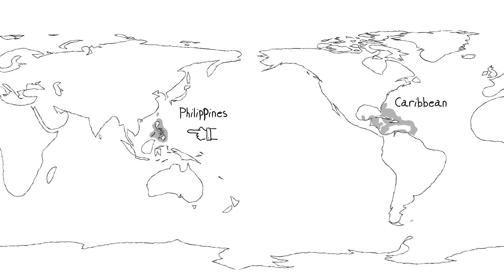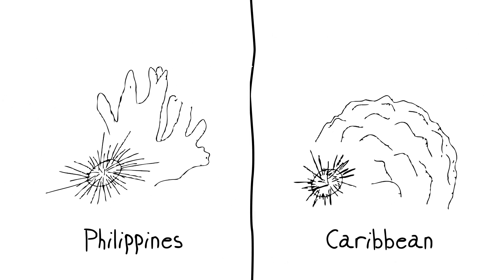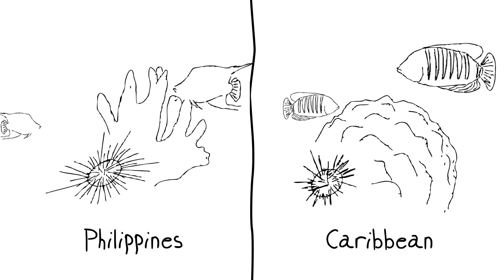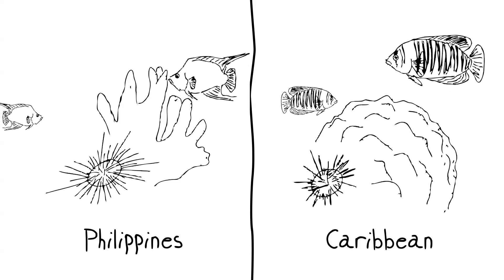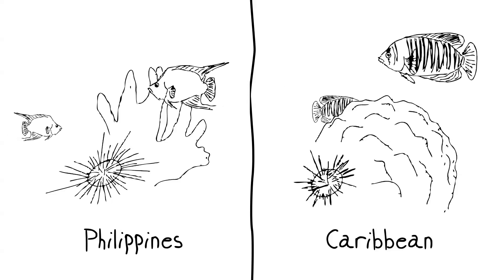Organisms making up a Philippine reef might be similar to and do the same jobs as those in a Caribbean reef, but they will be different species, sometimes very distantly related species at that. In other words, the ecosystem functions performed by these different reef organisms will be the same in spite of how different the lists of species from each reef might be.